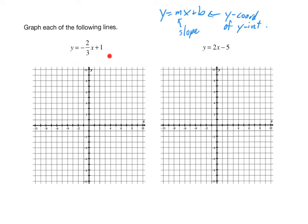Let's start with y equals negative two-thirds x plus one. First, is it in slope-intercept form? The key to slope-intercept form is that the y be totally isolated. Looking here, the y is fully isolated, so this is already in slope-intercept form. What is the slope? According to the theory, the slope is the coefficient of x. The coefficient of this x is negative two-thirds, so we've got a slope of negative two-thirds.